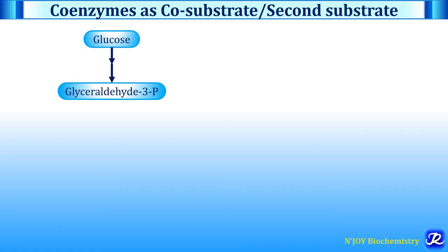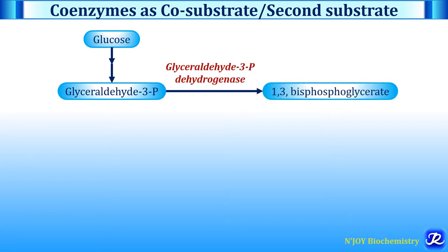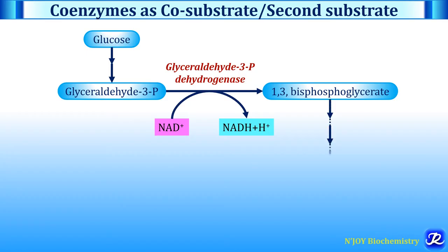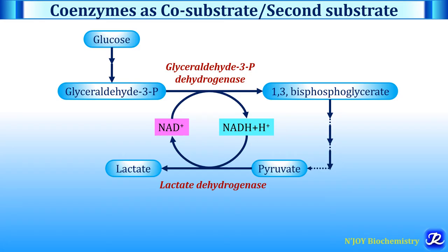Let's see an example. In glycolysis, glucose is converted to glyceraldehyde-3-phosphate through a series of reactions. Glyceraldehyde-3-phosphate is converted to 1,3-bisphosphoglycerate by the enzyme glyceraldehyde-3-phosphate dehydrogenase, and here NAD is reduced to NADH. Through various glycolytic reactions, pyruvate is formed as the end product of aerobic glycolysis. Pyruvate can then be converted to lactate by lactate dehydrogenase under anaerobic conditions, where NADH is oxidized back to NAD.